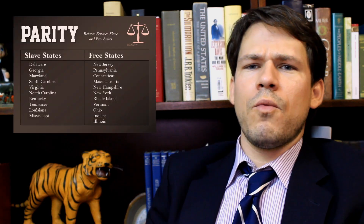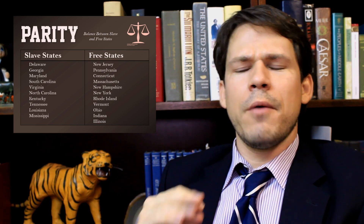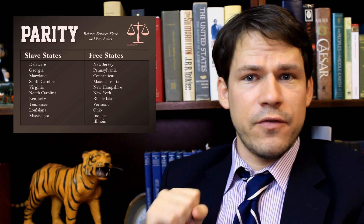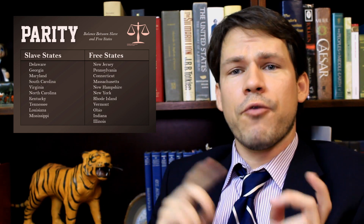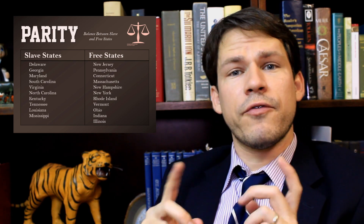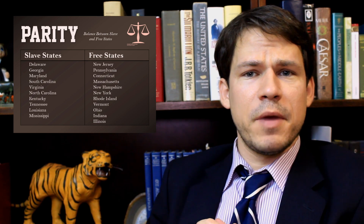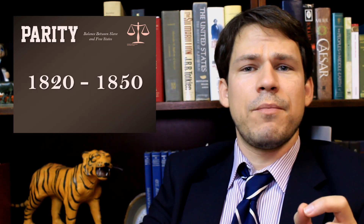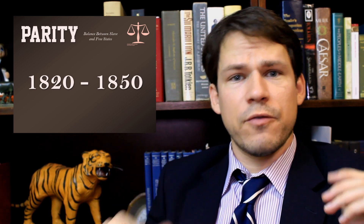During the antebellum period, really until the 1850s, the objective when thinking about states coming into the Union was parity — a parity between free and slave states, meaning an equal number of each to maintain a balance. When Missouri first applied for admission, there was one more free state than slave states. The informal policy from 1820 to 1850 was to maintain that balance.